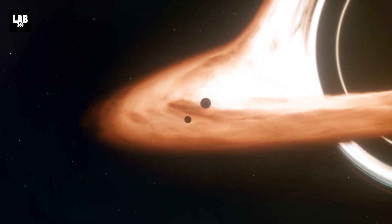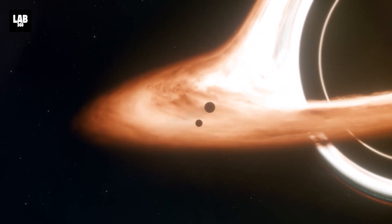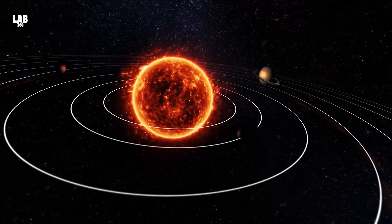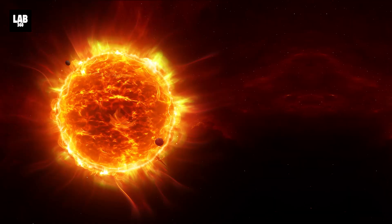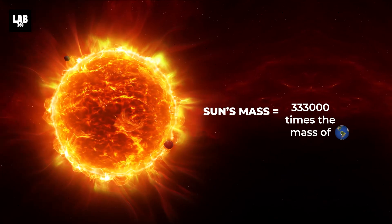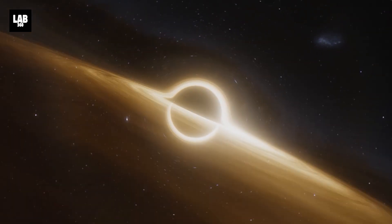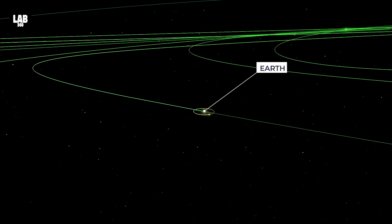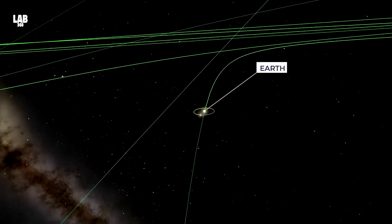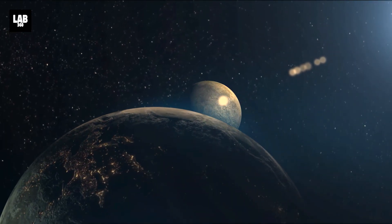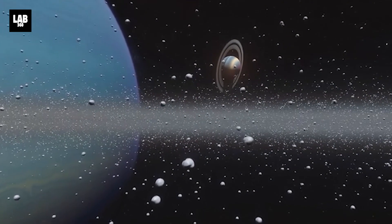The Earth and other planets would continue orbiting the black hole in much the same way they orbit the Sun today. The gravitational force that holds the planets in their orbits is determined by the Sun's mass, not its size or the nature of its transformation. So, the Earth's orbit would remain unchanged in terms of path and stability. The orbit would not spiral inward or outward, and the planets would not be flung off into space.